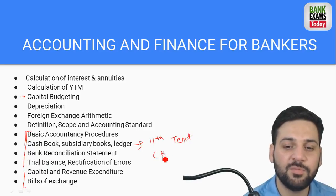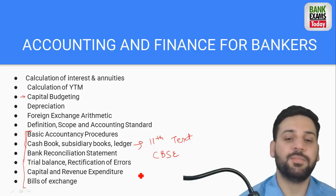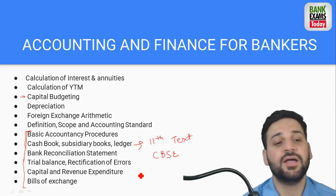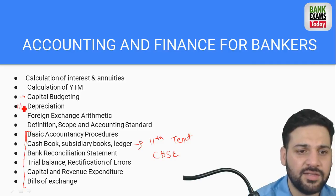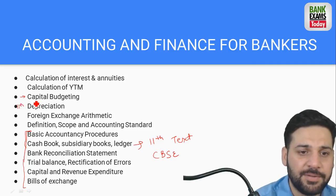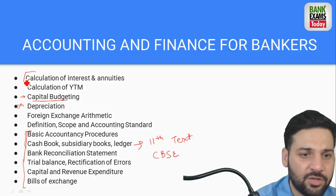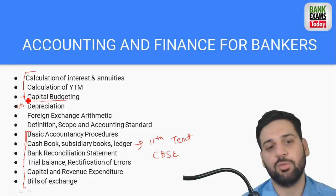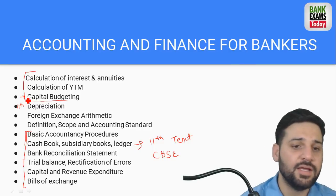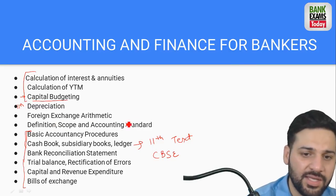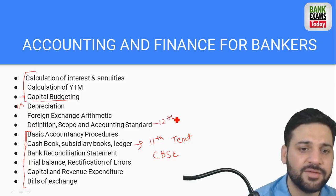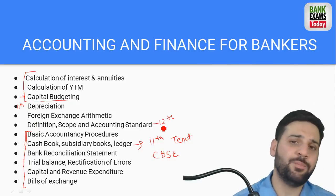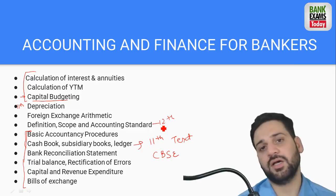If you have studied CBSE Class 11 books, you can read those too. Our notes are also available. Most of this syllabus is Class 11 level. Topics like depreciation and accounting standards are Class 12 level. Up to 12th level, the entire accounts syllabus is covered here. If someone has done Plus 2 in Commerce, it is easy for them.